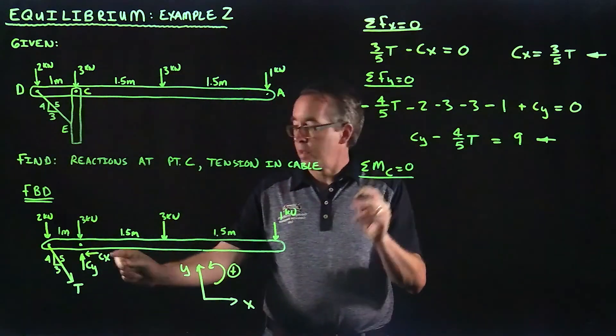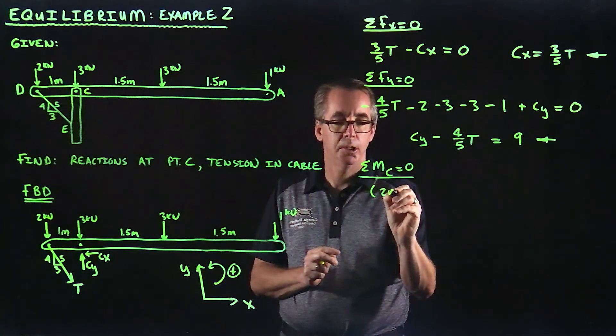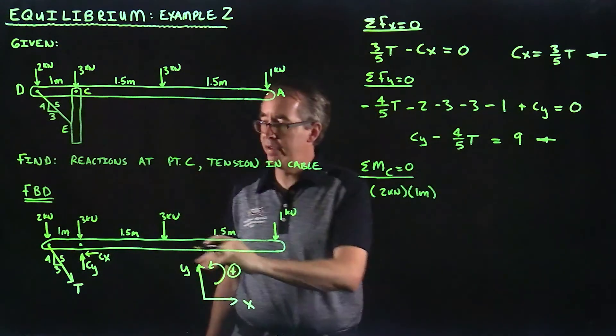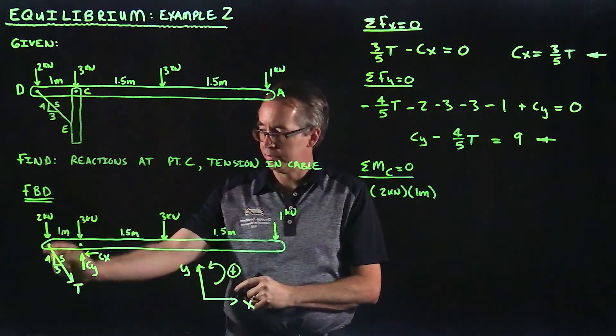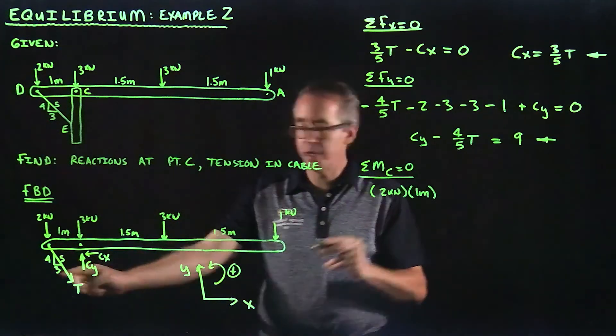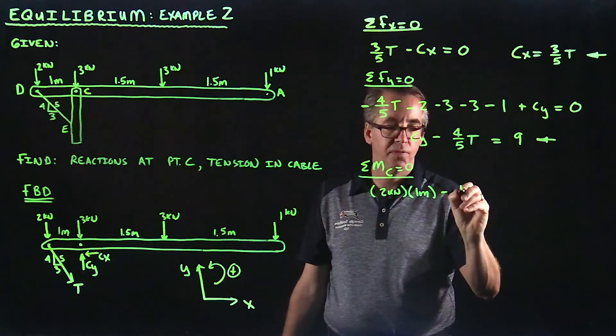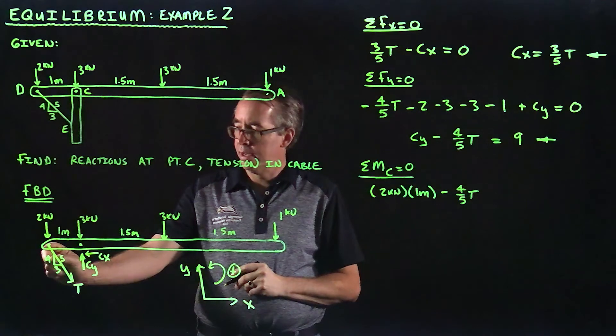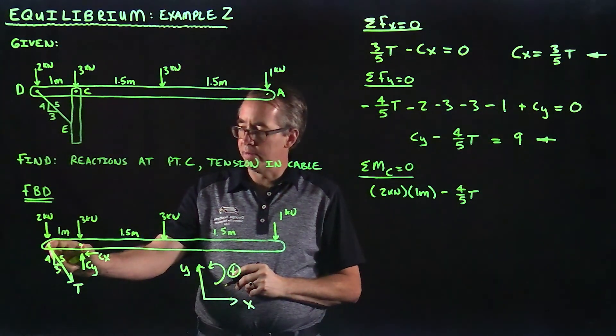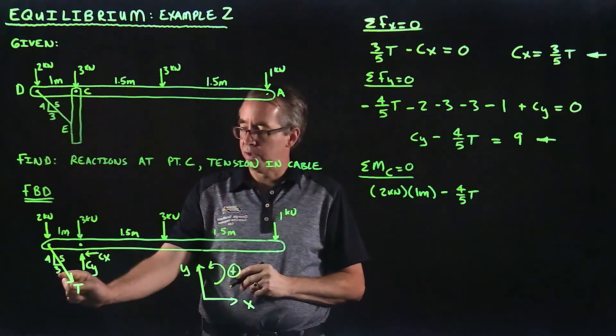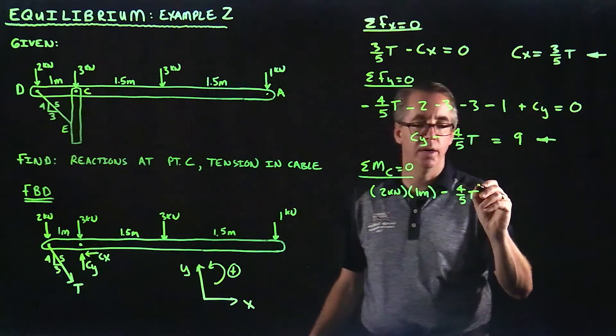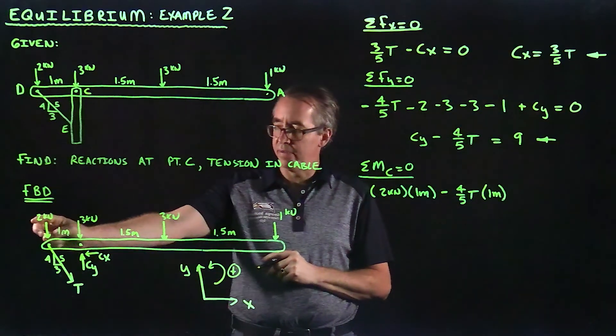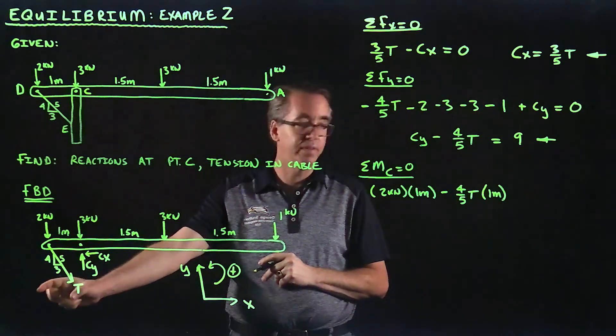I'm just going to be really careful that we get positive and negative moments correct. At point C, we have a force of 2 kilonewtons. The distance is 1 meter. That's going to be a positive moment relative to C. It's going to go counter-clockwise. Then we're going to have this vertical component, which is 4 fifths of T. That vertical component, 4 fifths of T, is going through at a distance of 1 meter. We don't have to worry about the horizontal component because that would be going through point C as well. That's also a positive moment.